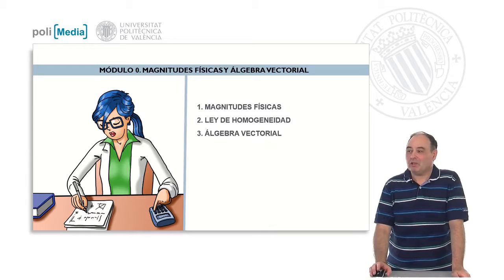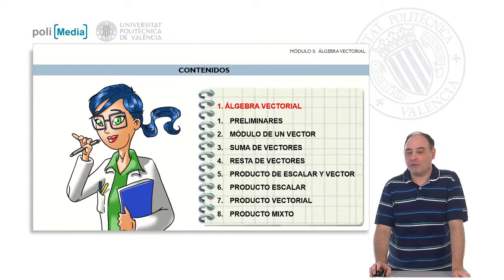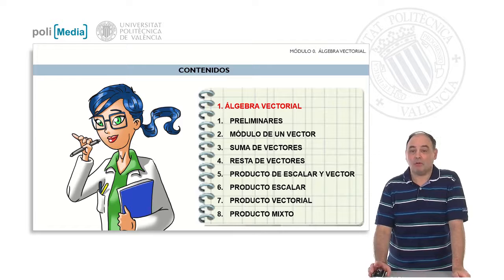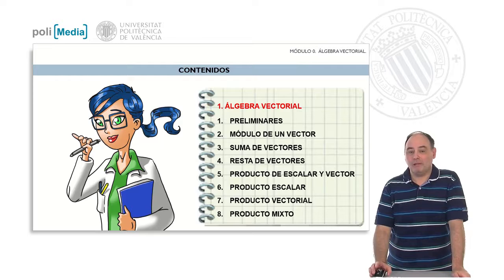Hello, we will continue with module 0, focusing on the topic of vector algebra. In this topic, we will review the most common operations needed in physics with vectors, ranging from the magnitude of a vector to the scalar triple product. We will begin with some preliminary notations and conventions that will be required.